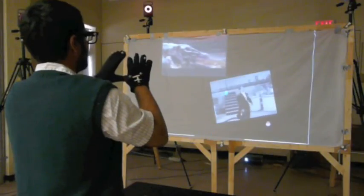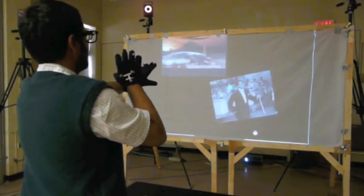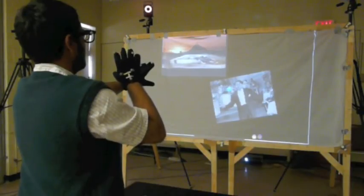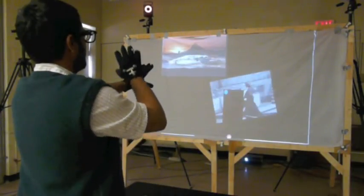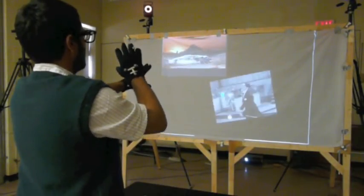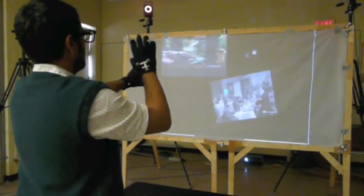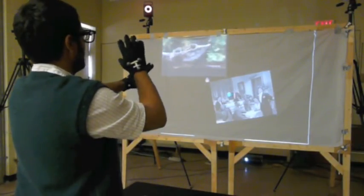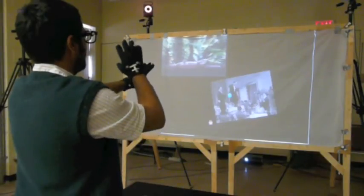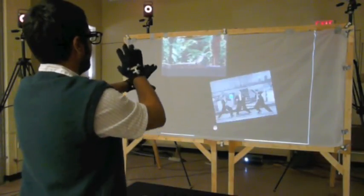The VJ can also scratch through the video content of the objects on the display. To begin, the VJ selects the video with a Breach gesture using the non-dominant hand. Within the same plane of the display, moving the dominant hand in a circular motion scratches through the video. Clockwise rotation moves the video forwards, while counter-clockwise motion moves the video in reverse.